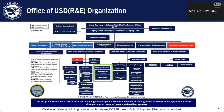This is our organization chart for the Office of the Undersecretary of Defense for Research and Engineering, commonly known as the Chief Technology Officer for the DoD. The green box shows where my organization fits in the CTO. System Security is one of the two organizations under the S&T program. I support the Director of Policy Standards and Guidance, which falls under our Director of Systems Security. The mission of the S&T program protection is to protect technology advantage and counter unwanted technology transfer to ensure warfighter dominance through superior, assured, secure, and resilient systems.